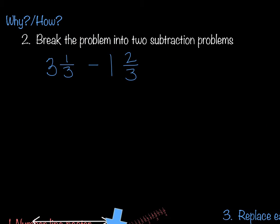Our next method is to break the problem into two subtraction problems. I'm basically going to separate the whole numbers. So my whole number is 3 on this side minus 1 on the other, which gives me 2. And then I have to do 1 third minus 2 thirds.